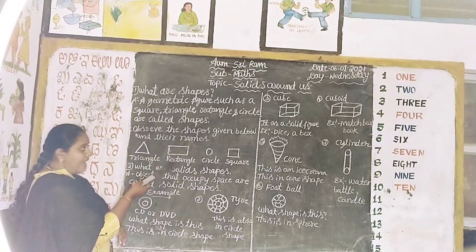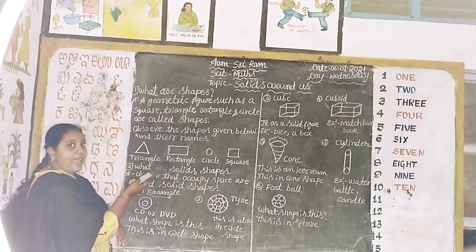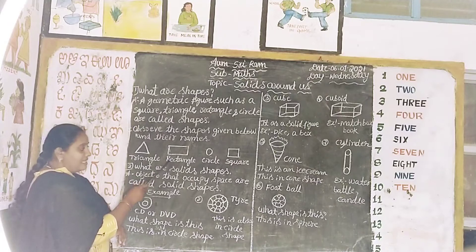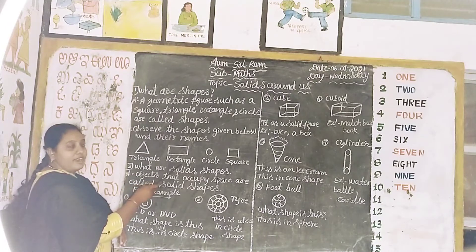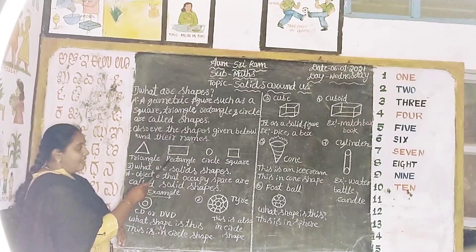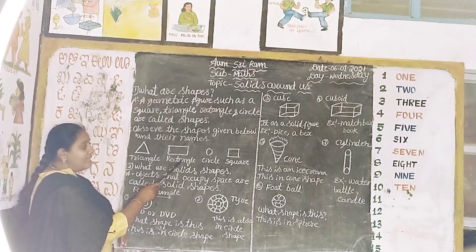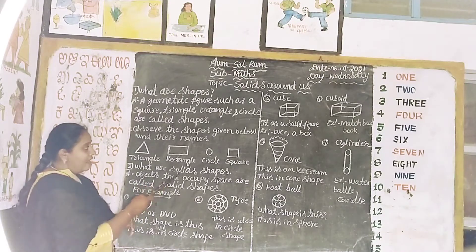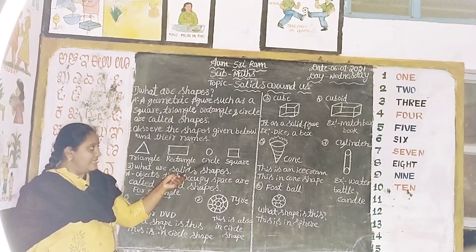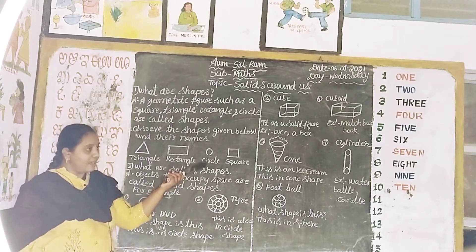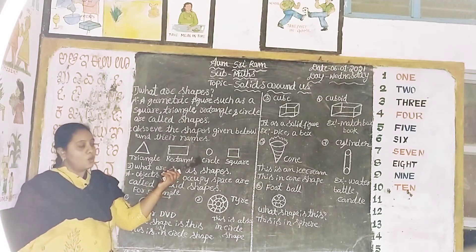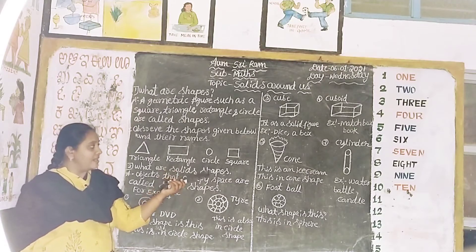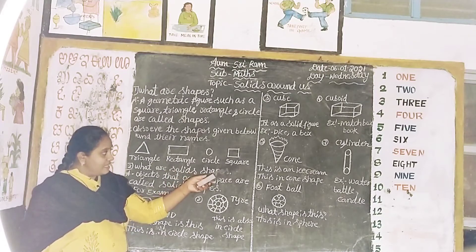What is this? This is a rectangle. What is the spelling of rectangle? Rectangle. What is this? This is a circle — no sides.